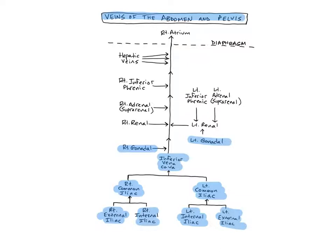The right and left renal veins are large diameter veins that serve as good landmarks to help you identify the other veins of the abdomen. The right renal vein drains the right kidney and empties into the inferior vena cava. The left renal vein drains the left kidney and receives blood from the left gonadal vein, left inferior phrenic vein, and usually the left suprarenal or adrenal vein.